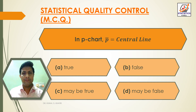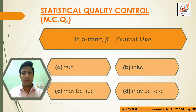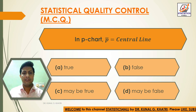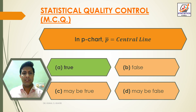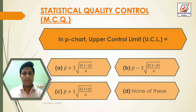Question 16: In P chart, P-bar is equal to the central line. Option A: True, Option B: False, Option C: Maybe true, Option D: Maybe false. Answer: Option A — True. In P chart, P-bar equals the central line.